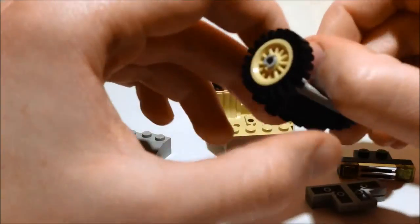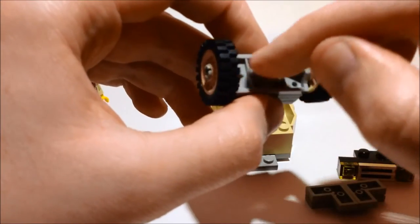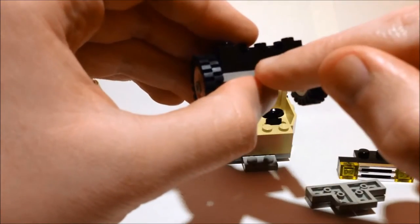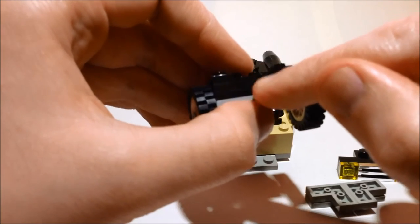For the front we have another 2x4 light grey plate with wheel pins on each side and again two 2x4 stacked plates, black this time.